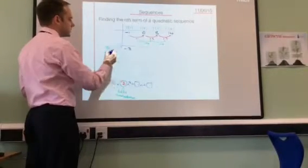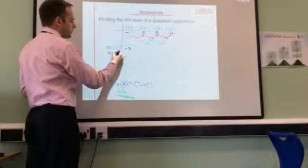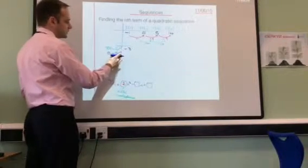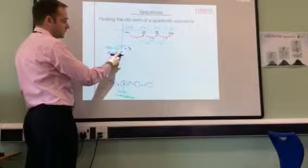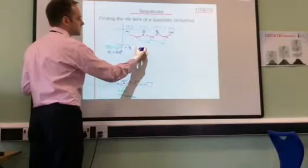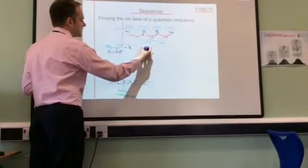For the next one, the term is 0. We need to take away 2 lots of 2 squared. 2 squared is 4. 2 lots of that is 8. 0 minus 8 is minus 8.